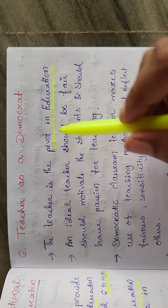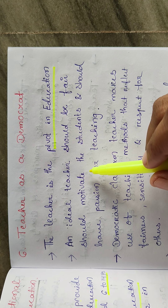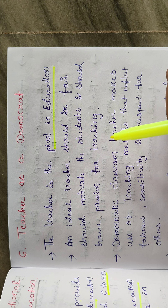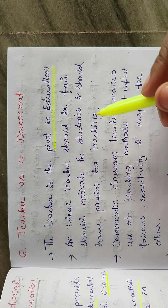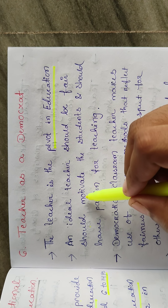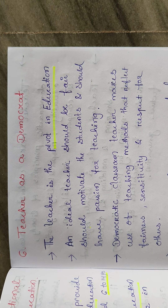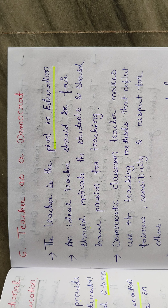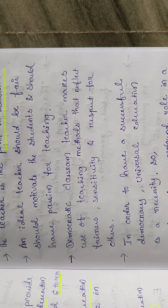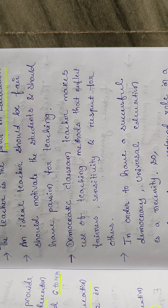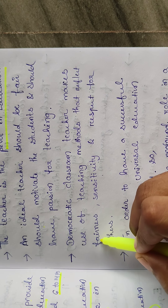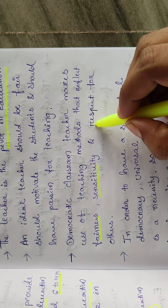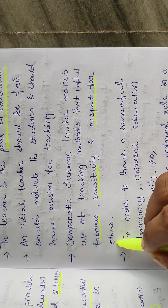An ideal teacher should be fair, should motivate the students, and should have a passion for teaching. She should have the right to motivate the students and have a passion for teaching — she should be able to motivate the children. In a democratic classroom, the teacher makes use of teaching methods that reflect fairness, sensitivity, respect for others, and respect for students.